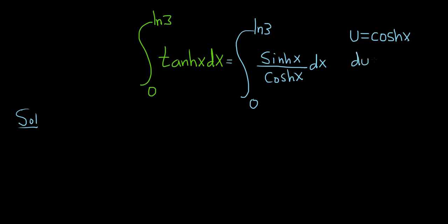Then we'll compute du, which is the derivative. The derivative of cosh is sinh. So we have sinh x dx. So you see this piece here in the numerator is our du. So it works out really nice. We'll have du over u, and that will turn into a natural log.